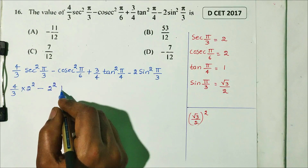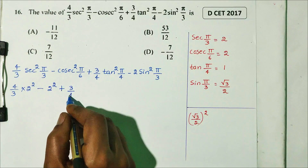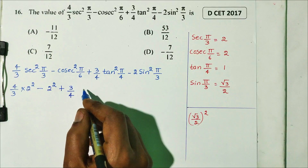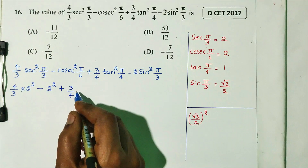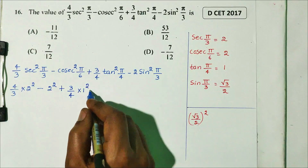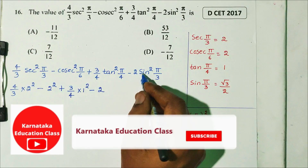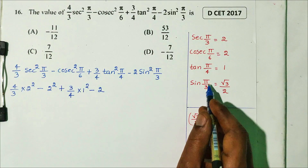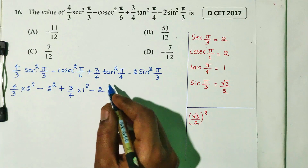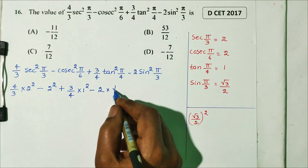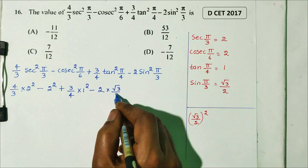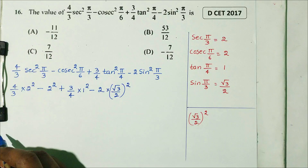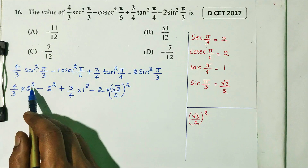Plus 3/4 times tan²(π/4). tan(π/4) is tan 45, which equals 1, so 1 squared is 1. Minus 2·sin²(π/3). π/3 is 60 degrees. sin(π/3) is √3/2, so sin²(π/3) equals 3/4. The value 2 times 3/4 gives 3/2.